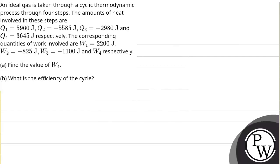Hello, let's see this question. The question is: an ideal gas is taken through a cyclic thermodynamic process through four steps.